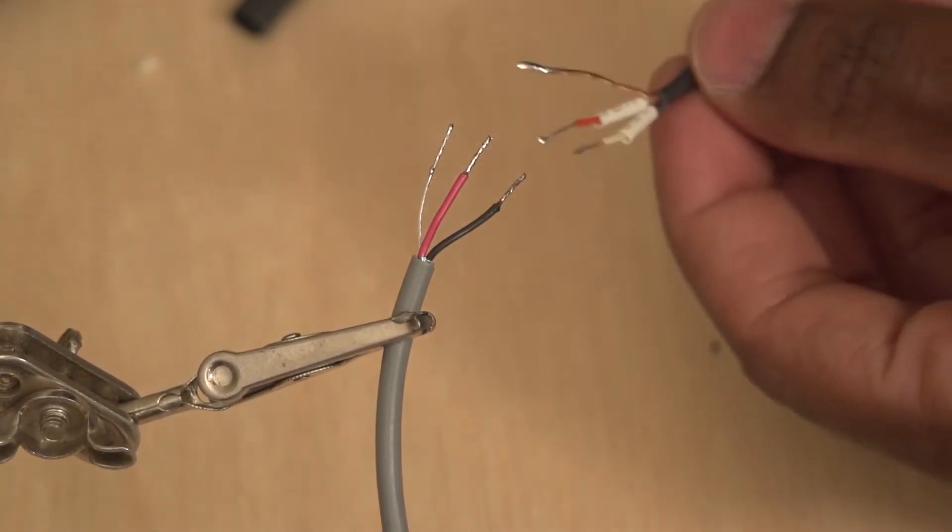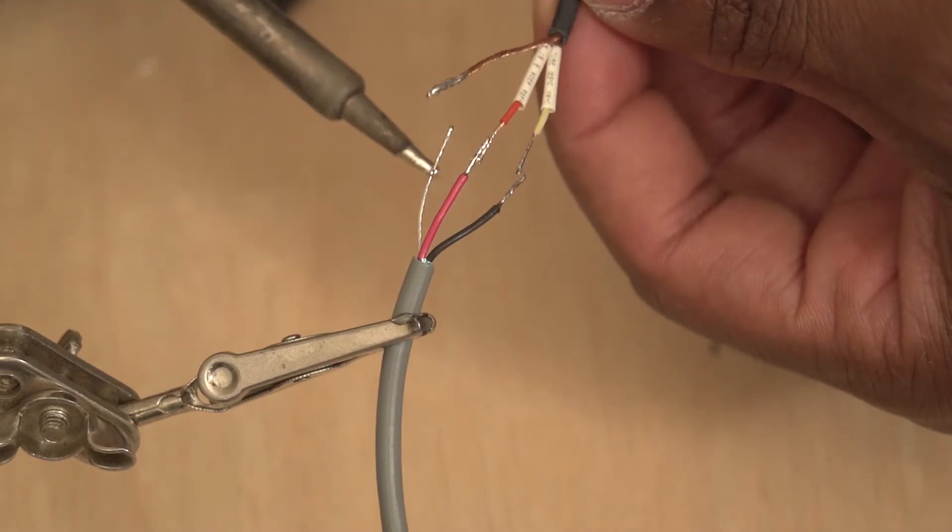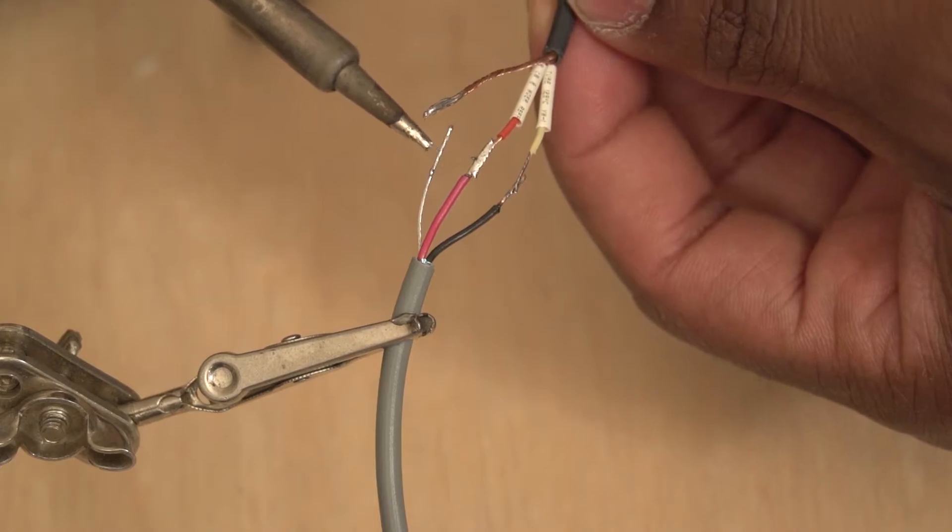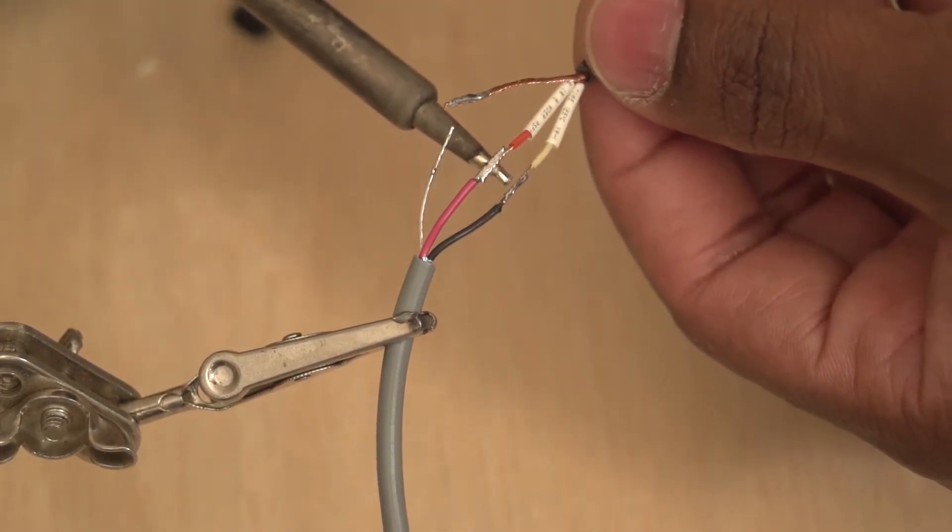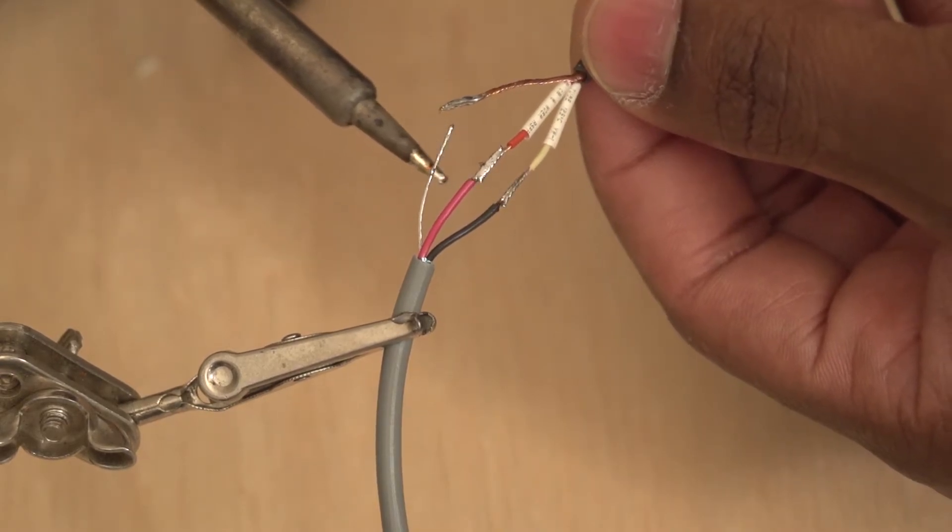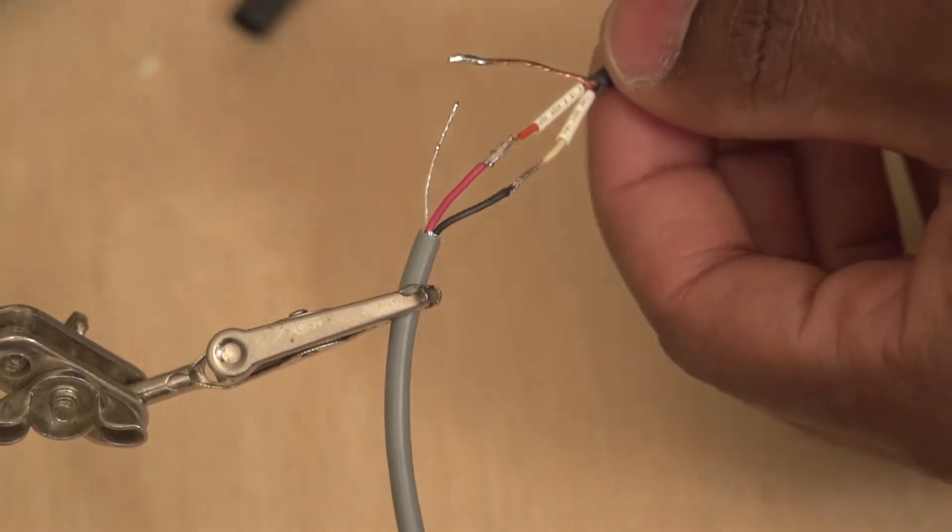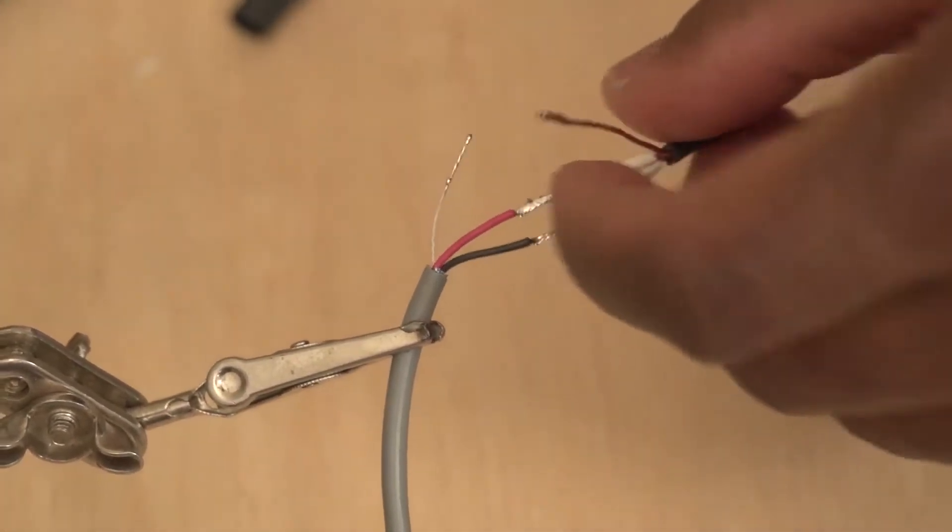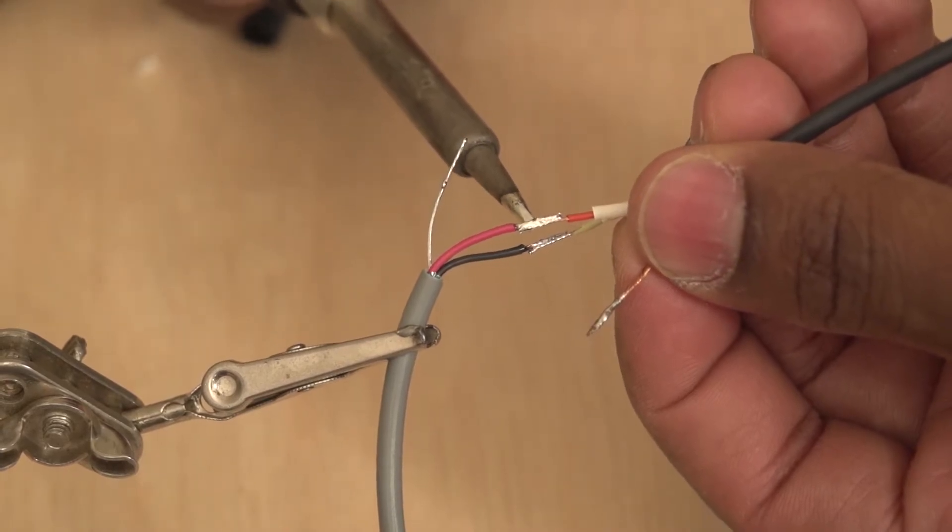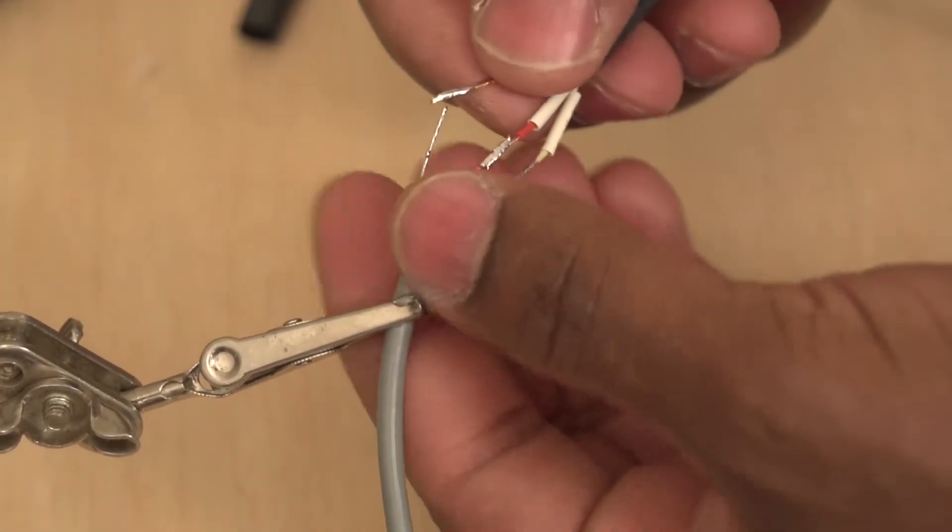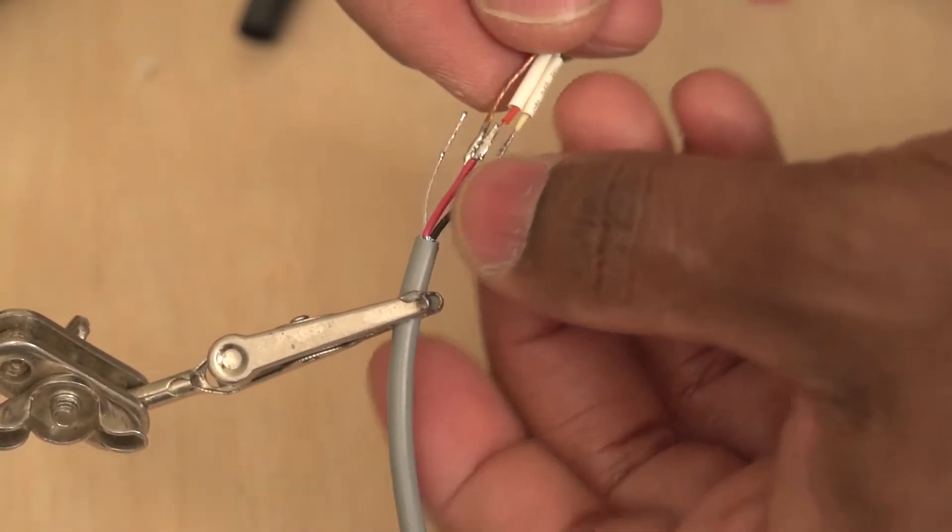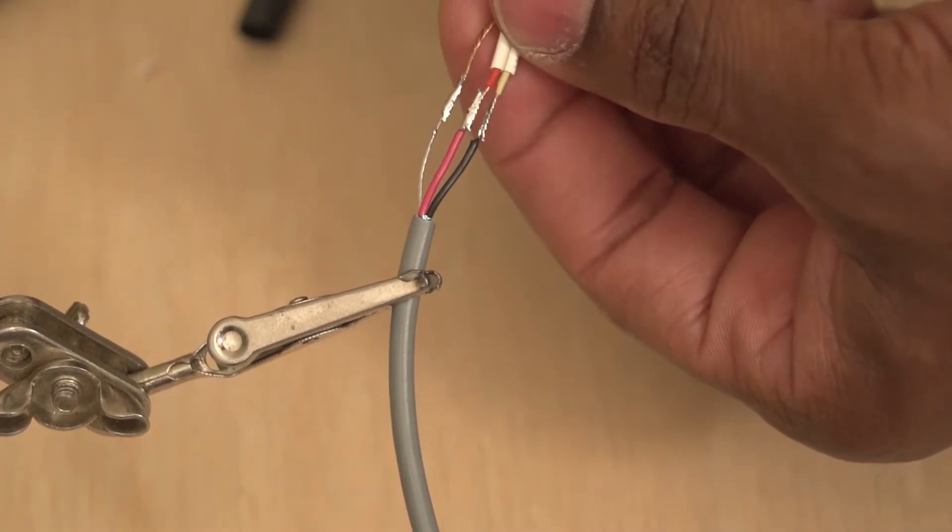Solder on the end of my soldering iron, put the reds together, touch and hold. Put the white and black together, touch and hold. Got a pretty good joint. I see a little solder nub on this connection, get rid of that. All right, let's get the grounds together here.